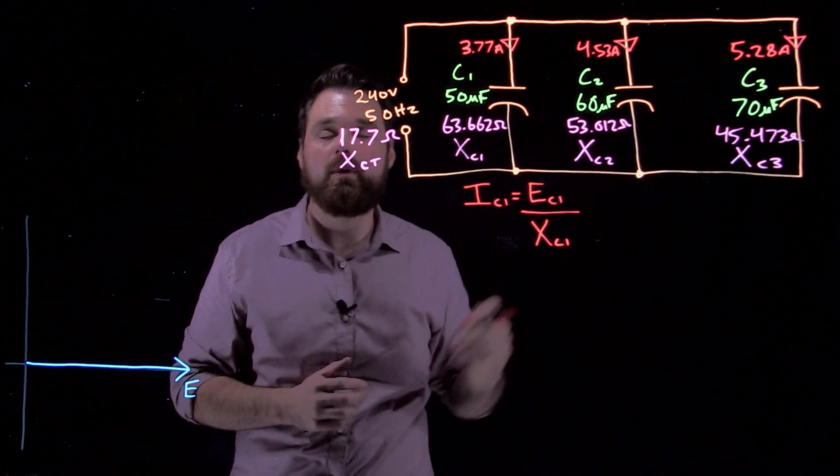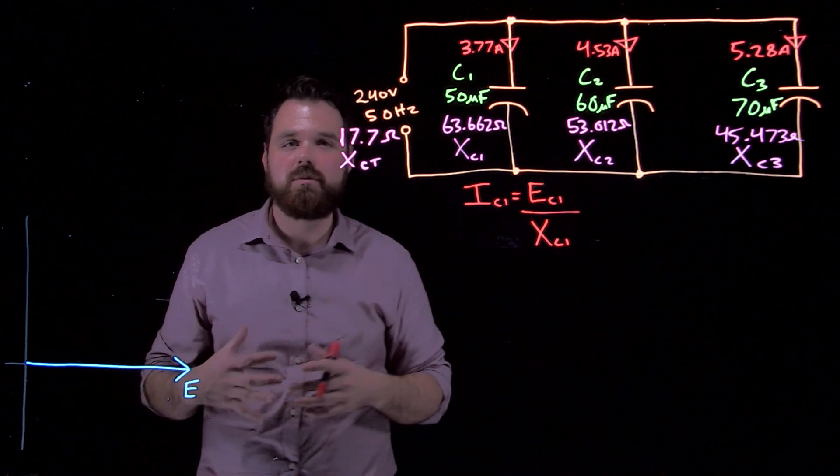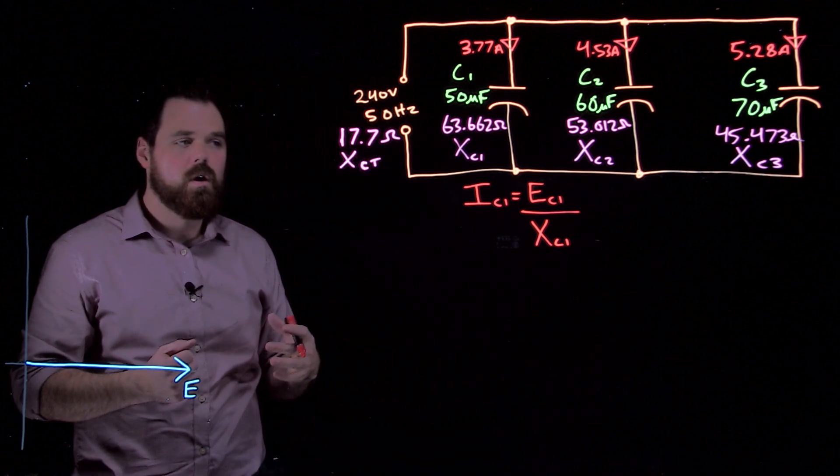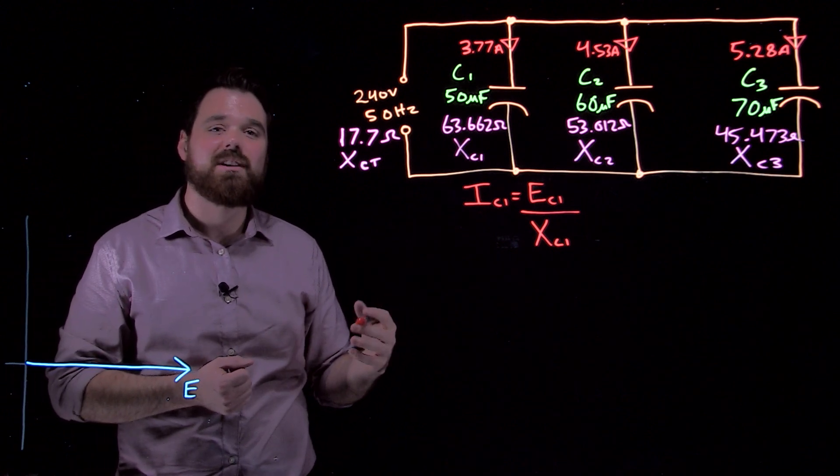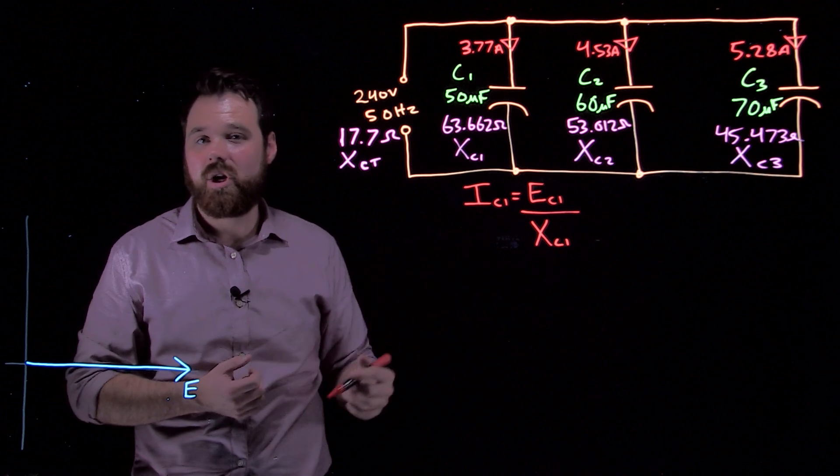When we want to take them to our phasor diagram to look at our phase relationships, in a capacitive circuit, we see our current is actually leading our voltage. Our voltage is lagging our current.